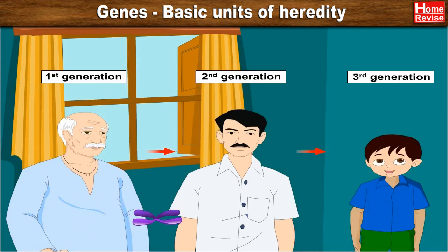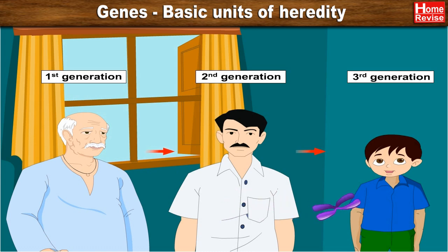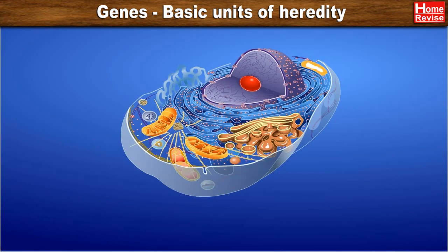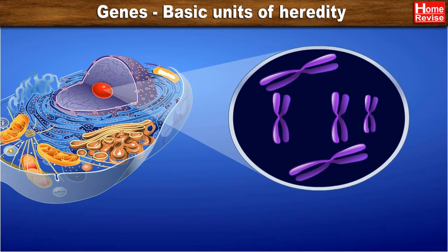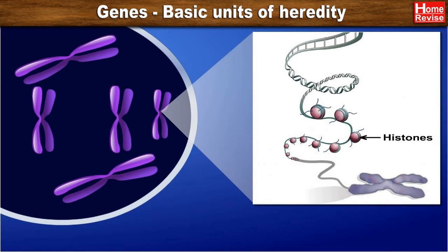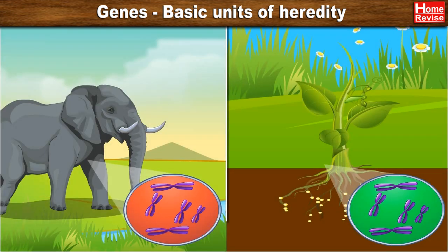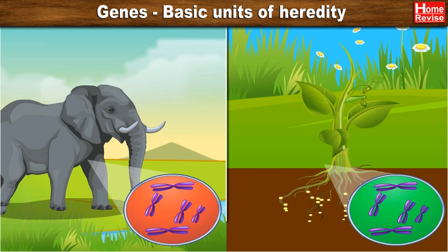The chromosomes are contained within the nucleus of the cell and are formed of basic proteins called histones and deoxyribonucleic acid, that is DNA. A gene is a short segment of DNA in a chromosome. Each type of organism has a specific number of chromosomes.